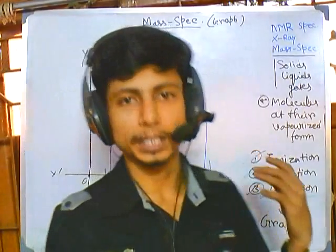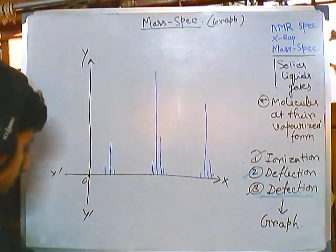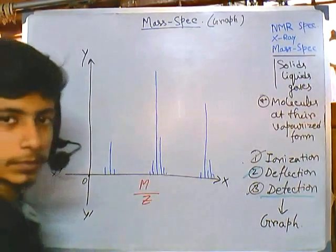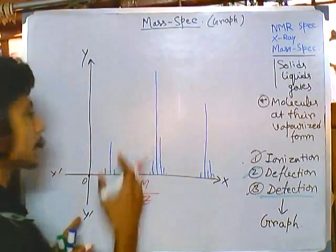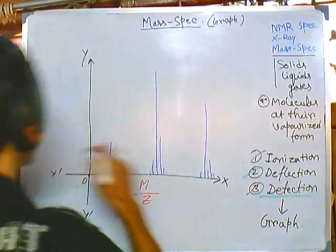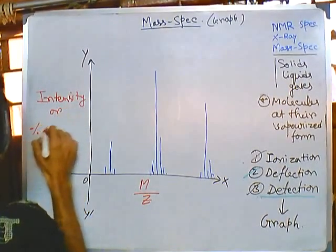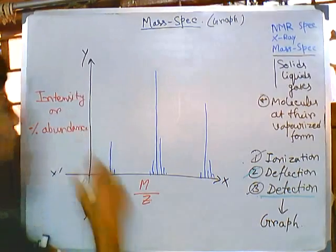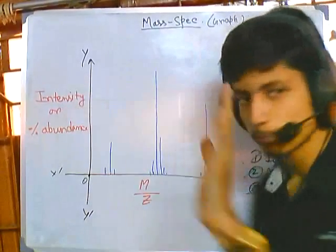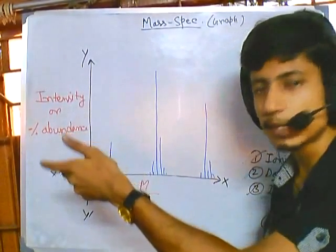For understanding the graph we must know what the regions of the graph are and what they are denoting. The x-axis of the graph tells us the mass-to-charge ratio, so we are plotting mass-to-charge ratio on the x-axis. On the y-axis we plot the intensity or percentage abundance. Basically on the x-axis we plot mass-to-charge ratio, and on the y-axis we plot intensity or percentage abundance of that particular molecule.